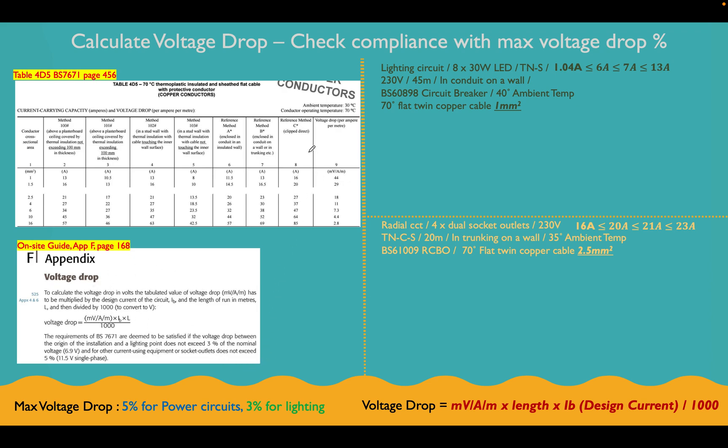Okay, so let's look at this first. Before, what we did, we went down this column here. We had reference method B, because we're in conduit or trunking, and we went down to 13 amps. We need our cable for the lighting circuit to be able to take 7 amps. So we went here and we went 13 amps is what we'll do. And we went across and selected our cable size, which was 1mm there.